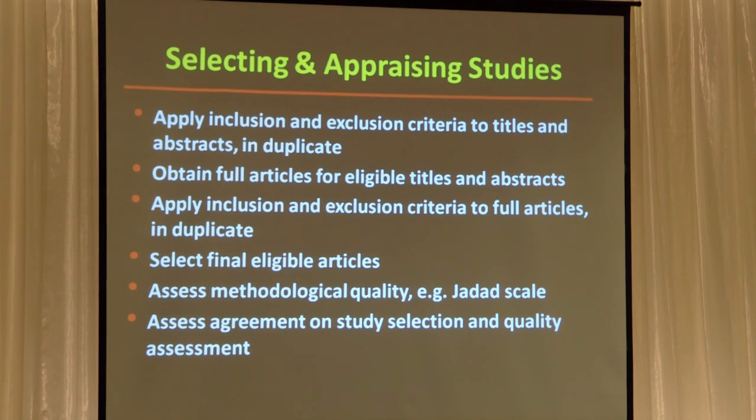Why is it important to make the selection and critical appraisal in duplicate? Because it's just like a diagnostic test — you need to make sure that everybody's measuring the same thing. And if you and I both appraise the articles, how do we decide how frequently we agree? Kappa. You can apply Kappa to two, three, or four evaluators. You want to reassure that we're seeing the same thing, and you should have a strategy established beforehand for when you disagree — either discuss and resolve, or get a third person to break the tie.